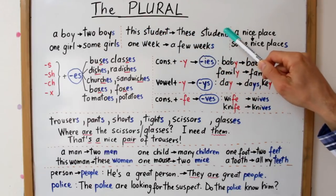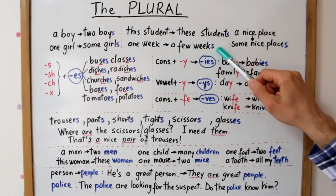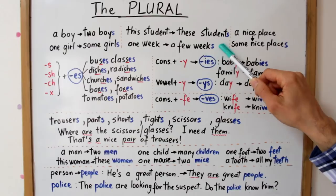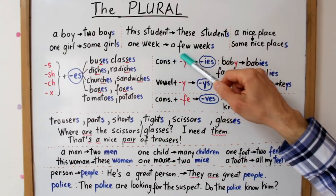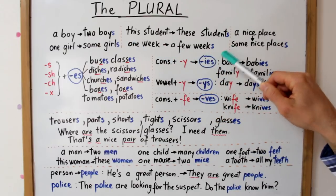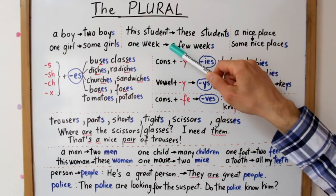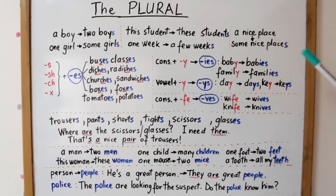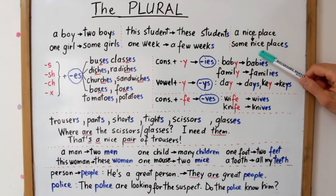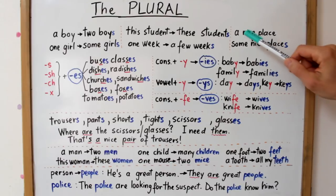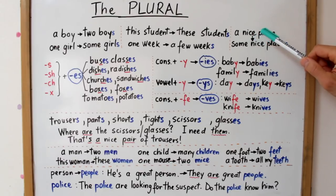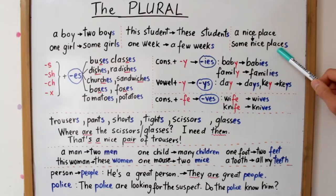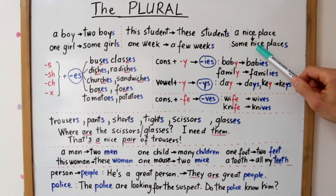Încă un exemplu cu S pronunțat S: one week / a few weeks (o săptămână / câteva săptămâni). A nice place / some nice places (un loc plăcut / câteva locuri plăcute). Observăm că în aceste cazuri terminația S se pronunță S sau Z în funcție de sunetul final al cuvântului de bază.